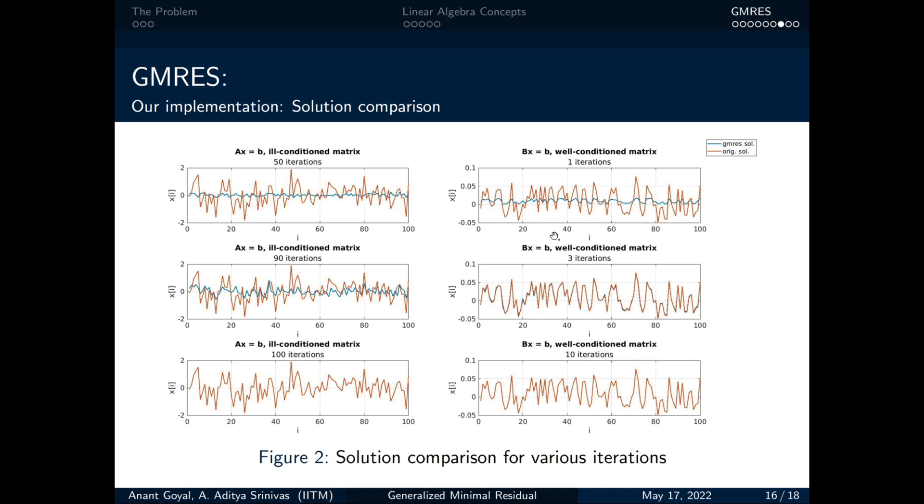Similar is the analysis for B but it converged with much less number of iterations compared to A. That is, in almost about 6 to 7 iterations, the GMRES solution is almost exact.